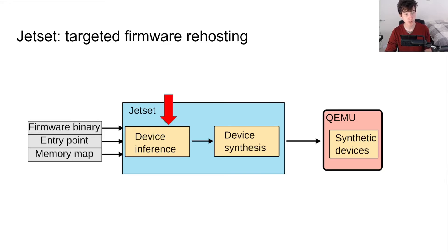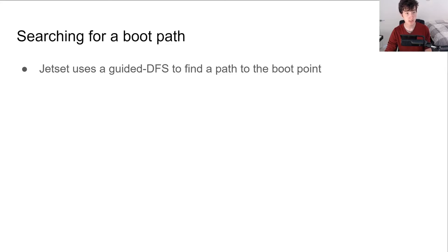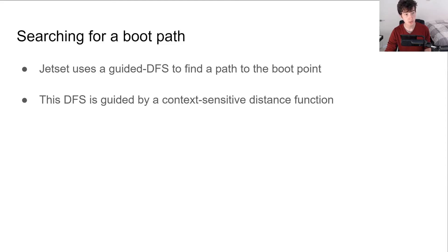In the device inference stage, JetSet uses a guided depth-first search symbolic execution strategy to find a path to the boot point within the firmware. Guided depth-first search does not explore all possible device initialization paths, but this is fine because JetSet's goal is not to construct a complete emulator — we just want to get to the boot point as fast as possible. This search is guided by a context-sensitive distance function based on graph distance within the firmware's control flow graph, allowing JetSet to reason about distance across function calls as well.